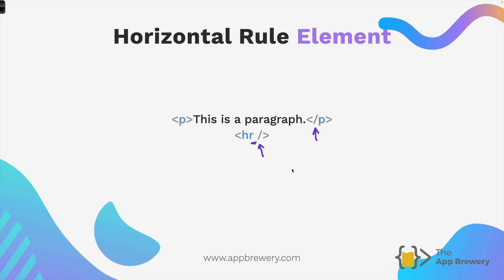Normally by convention, you'll see a little space between the tag name and that forward slash. This is something to be really careful about when creating these void elements — make sure you've got the forward slash going in the right direction, like this, and not a backslash. When it points to the right, it's a forward slash; when it points backwards, it's a backslash.